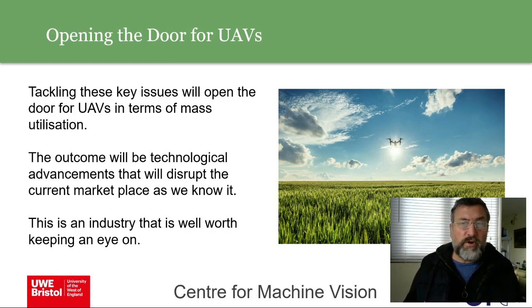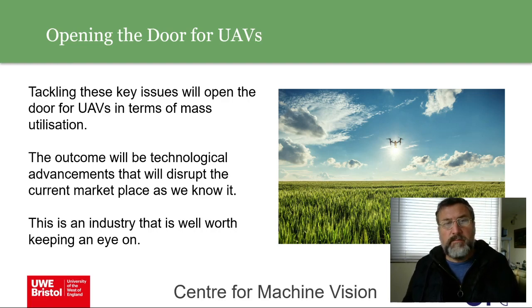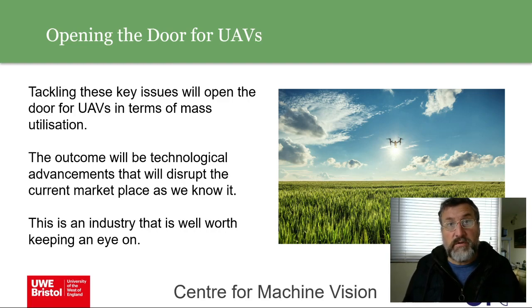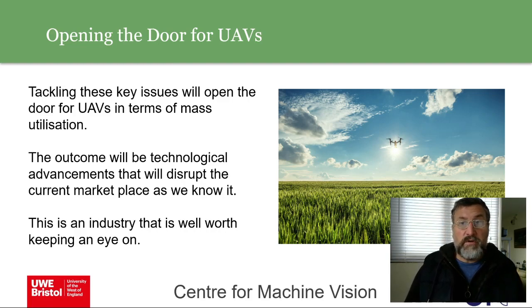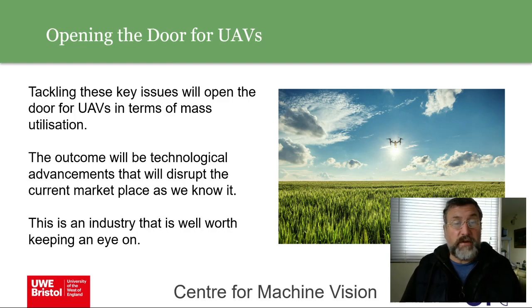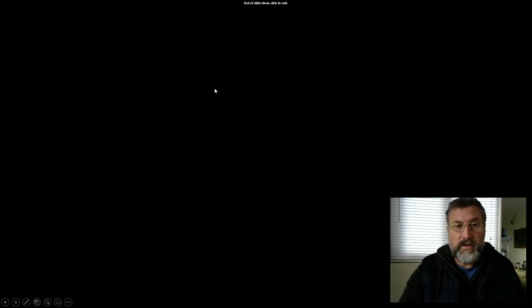Addressing integration, standardization, and regulation will open the door for UAVs to move beyond experimental and limited uses to mass deployment. This will disrupt the current marketplace, which needs disruption — just as Amazon is disrupting delivery. We probably need similar disruptors in agri-tech to make revolutionary change and demonstrate the benefits of UAVs with vision and deep learning. It's an industry well worth keeping an eye on — that's it for this week, see you next time.